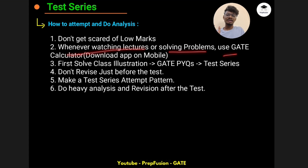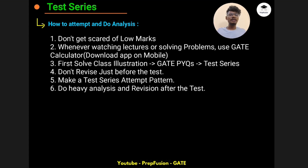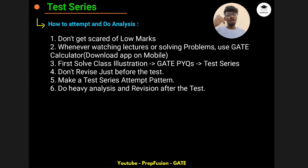The next point: whenever watching lectures or solving problems, use the GATE calculator — download the app on your mobile. Many students use the normal physical calculator from college, but I highly recommend you don't use that. Use the GATE calculator app because the calculator interface in the test series website is just like the GATE calculator. You need to get trained on how to use it — that can save you 5 to 10 minutes and also save you marks, because a silly error on the GATE calculator can give you a wrong answer and result in negative marks.